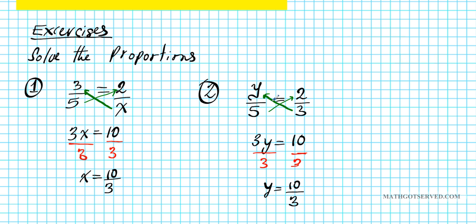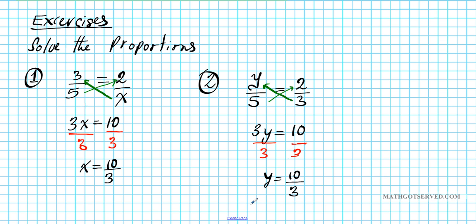Now, another shortcut you can use for proportions, when you have the variable on the top, you can simply multiply by the denominator to get the variable isolated. Okay, but we're just following the same strategy. Sometimes you can take shortcuts when the variable on the top to get to your desired result quicker, all right?